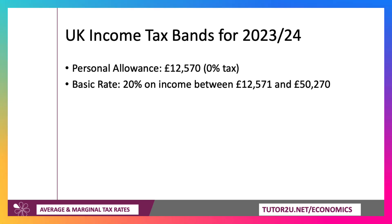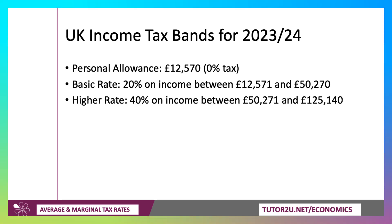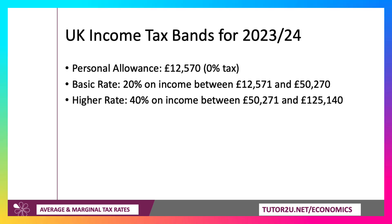If you earn between £12,571 and £50,270 per year, you pay income tax at 20%. Above £50,271, the marginal tax rate goes up to 40% on all income up to and including £125,140.